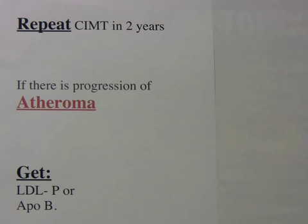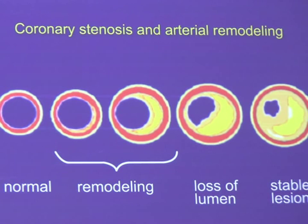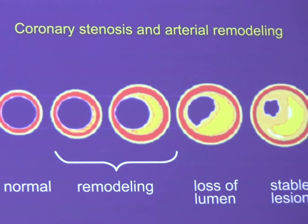To get regression of plaque, you want to get the LDL-P less than 750 or the ApoB less than 60. I wrote the Tubby Theory from Topeka in order to educate people that we presently have the ability to prevent most sudden coronary death, most heart attacks, and most strokes inexpensively and safely.